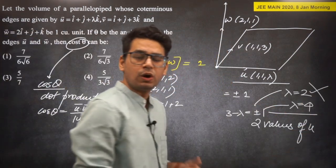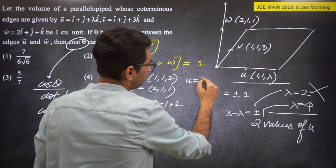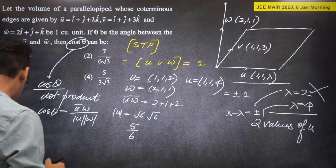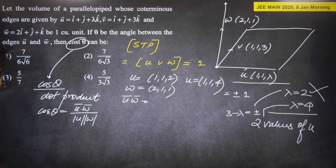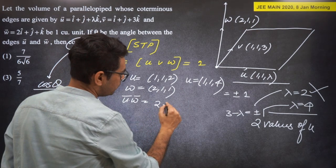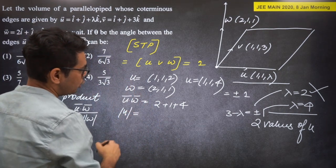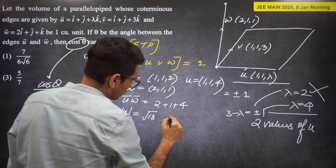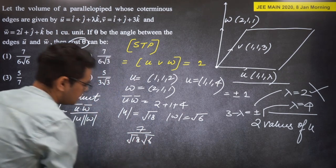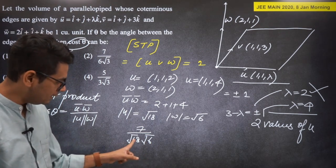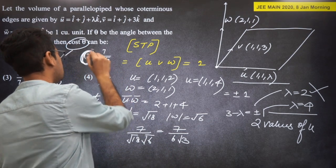For lambda = 4: U = (1, 1, 4), W = (2, 1, 1). U·W = 2 + 1 + 4 = 7. |U| = √(1+1+16) = √18, |W| = √6. cos(theta) = 7/(√18 * √6) = 7/√108 = 7/(6√3). This matches the second option. So the answer is option 2.